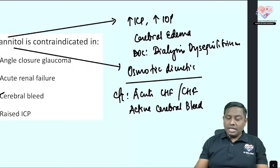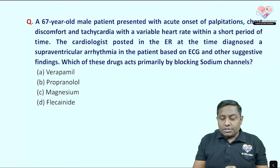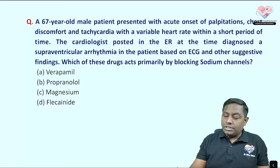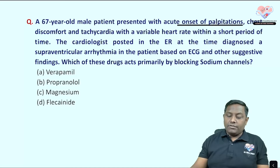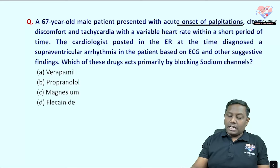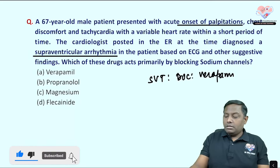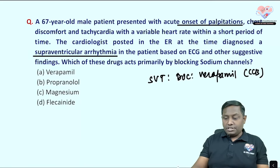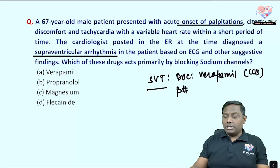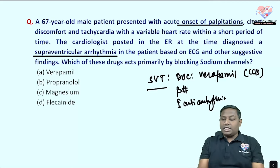The next question describes a 67-year-old male presenting with acute onset palpitations, chest discomfort, and tachycardia with variable heart rate. The cardiologist in the ER diagnoses supraventricular arrhythmia. The drug of choice for SVT is verapamil, a calcium channel blocker, though beta blockers and class 1 antiarrhythmics can also be used.